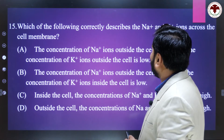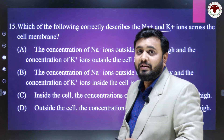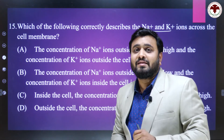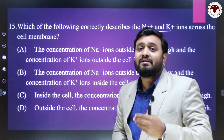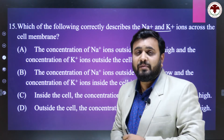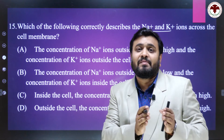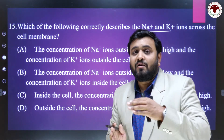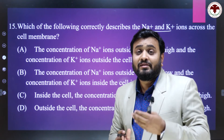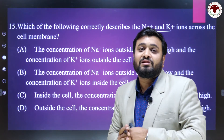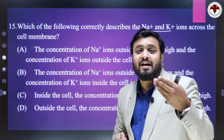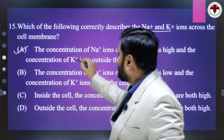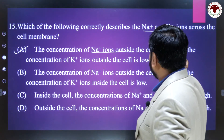Which of the following correctly describes the Na+ and K+ ions across the cell membrane? Remember: outside the cell membrane the concentration of Na+ is always high, and the concentration of K+ is low outside the cell membrane. K+ is present inside the cell membrane. So the right answer is A — the concentration of Na+ outside the cell is high and the concentration of K+ outside the cell is low.